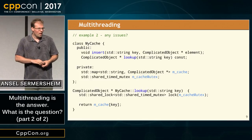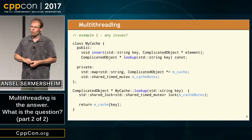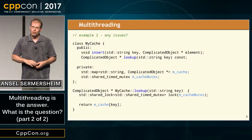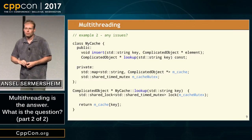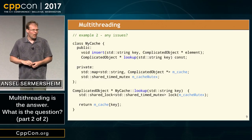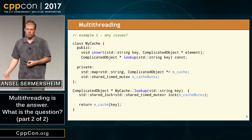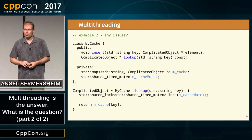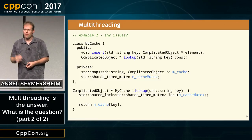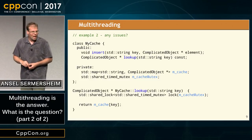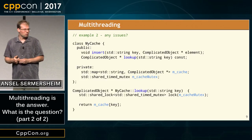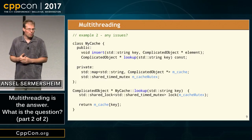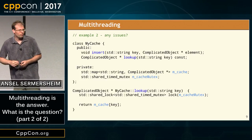What if we have a slightly more complex example? This is a multi-threaded example and I have a cache. I've got the data structure — it's just a regular std::map. I've got some information in it, and I have the ability to insert data and look up data by key. Any problems with this?